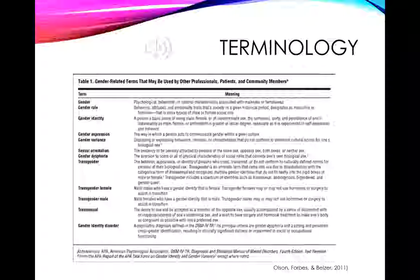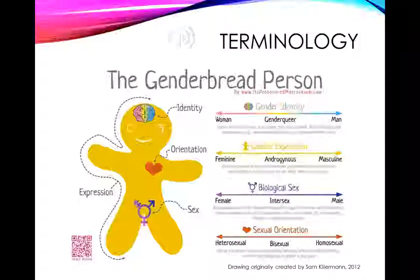The second slide is a set of gender-related terms that tend to be used more in formal environments — the ones you may see in medical literature or the medical record. There is also a depiction called the gender-bred person, which helps distinguish the various continuums that individual persons may exist on. These are not mutually exclusive: somebody can be gender-queer but have a more feminine gender expression, with a biologic sex of male and a sexual orientation that is heterosexual or homosexual.